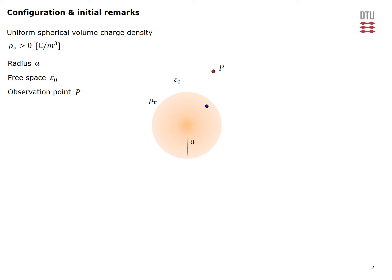Here we see our charge configuration of uniform spherical volume charge density. We assume that it is positive and has a radius denoted by A. It is located in free space with free space permittivity epsilon naught. The objective is to determine the electric field at an observation point P outside as well as inside of this charge distribution.